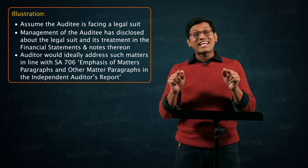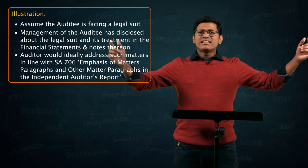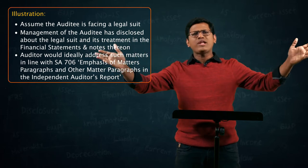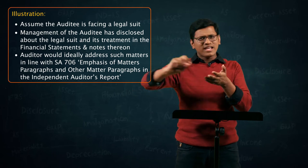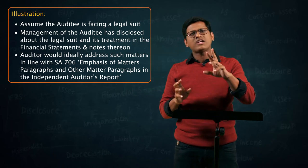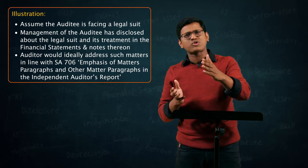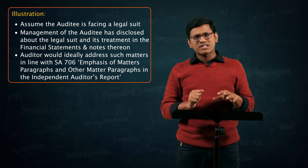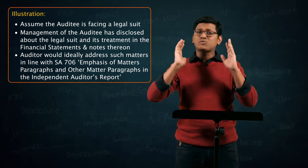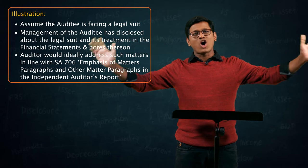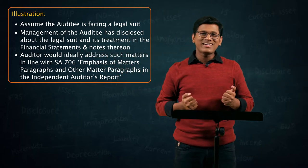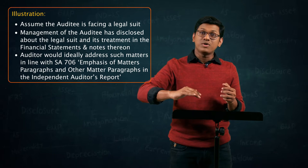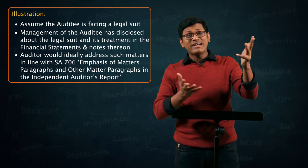Now under SA 701, what are we expected to do? There might be 100 items that you communicate with management as part of your audit — big and small, everything. Maybe there were no signatures on some vouchers, or bank reconciliation statements were missed twice during the year. As per SA 265, you communicated a lot of these points with management. Now, everything will not have the same weightage — some may be important, some less important, some super critical. You will have varying degrees of importance.